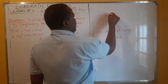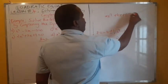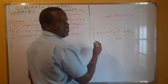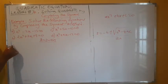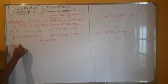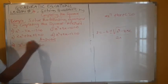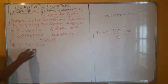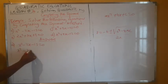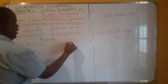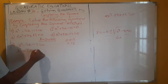So for this equation, if we are to solve for x by completing the square, you arrive at the quadratic formula. Now, what is the first step? If you have x squared minus 2x minus 15 equals zero, the first step is to take the constant to the right-hand side. So we have x squared minus 2x equals zero plus 15, which gives us 15.